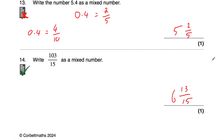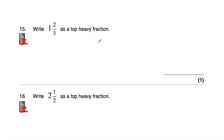Question number 15: write 1 and 2 thirds as a top-heavy fraction. We're dealing with thirds. If we've got a whole, that's 3 thirds, and then we've got another 2 thirds. So altogether we would have 5 thirds. Alternatively: take the whole number 1, times it by 3 to get 3, then add on the numerator 2 to get 5. So it's 5 thirds.